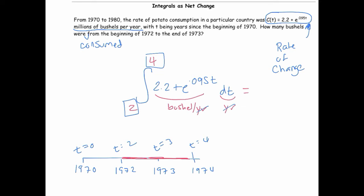you end up getting 7.06, about 7.064 millions of bushels.